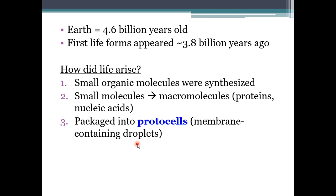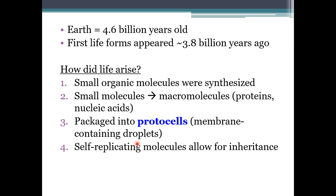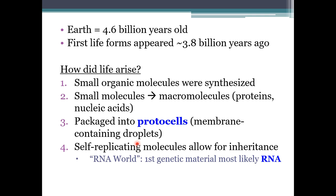Basically, those macromolecules got packaged into what we are going to call protocells, which are basically like membrane-containing droplets, just very small little droplets. And then eventually some self-replicating molecules — some molecules that could copy themselves — were synthesized. And that allowed for traits to kind of be passed on. In general, the best evidence suggests that the first genetic material was not actually DNA; it was probably RNA. And the first catalyst, the first things that would actually synthesize that RNA, were ribozymes — not ribosomes, but ribozymes.